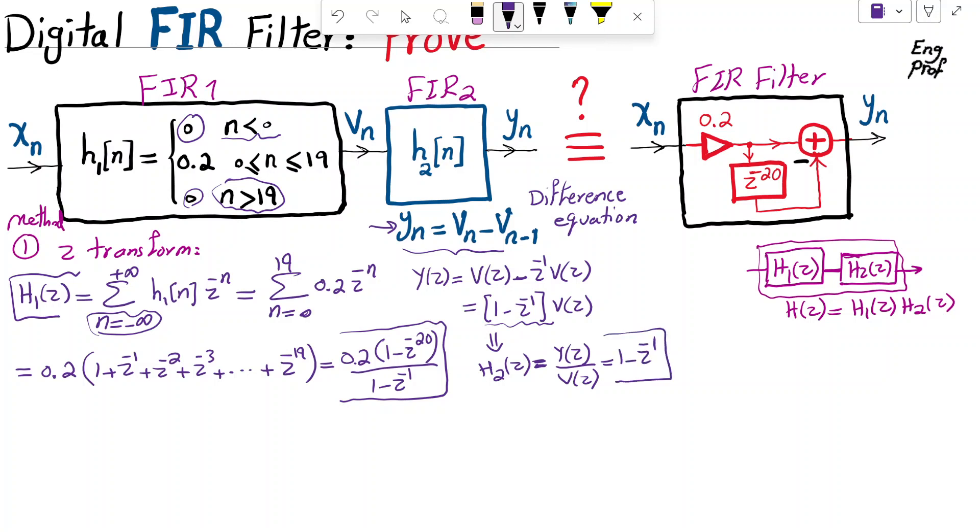Great. So we found H2 of Z as well. And then we're going to just substitute here. So what I'm going to say then? HZ, which is the product of these things we found,